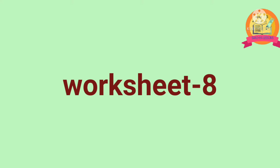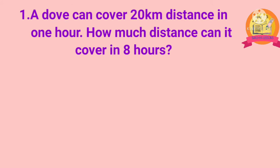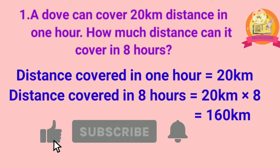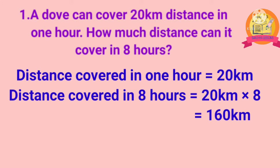Worksheet 8. First problem: a DAO can cover 20 km distance in 1 hour. How much distance can it cover in 8 hours? Solution: distance covered in 1 hour is equal to 20 km. Distance covered in 8 hours is equal to 20 km multiplied by 8. After multiplication, we get 160 km. Therefore, distance covered in 8 hours is equal to 160 km.